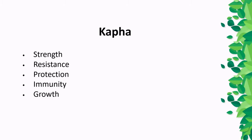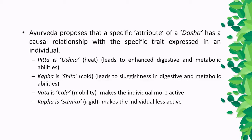Ayurveda proposes that a specific attribute of a dosha has a causal relationship with specific traits expressed in an individual. Each dosha has specific attributes. For example, Pitta is Ushna — heat — and this attribute in the body leads to enhanced digestive and metabolic activities. Similarly, Kapha is Sheetha — cold — and this leads to sluggishness in digestive and metabolic activities. Vata is Chala, meaning mobile, and this makes an individual more active, whereas Kapha is Stimita — rigid — making the individual less active.